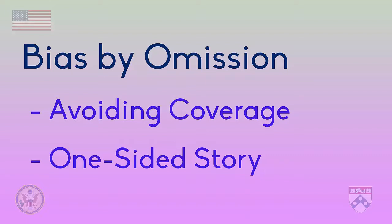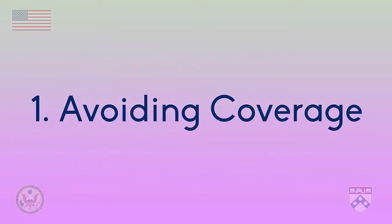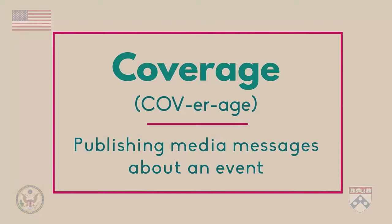The first type of bias by omission we're going to talk about is avoiding coverage of a story. Coverage of a story means publishing media messages about an event. So if a media company isn't publishing any stories about a situation, they're avoiding coverage of it.